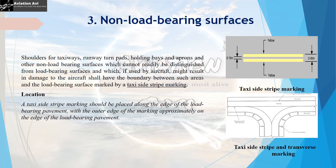Now let us look at visual aids to denote non-load bearing surfaces. Shoulders of taxiways, runway turnpads, holding bays and aprons, and other non-load bearing surfaces which cannot readily be distinguished from load bearing surfaces, and which if used by an aircraft might lead to damage to the aircraft, shall have the boundary between such areas and the load bearing surfaces marked by a taxi side stripe marking. The taxi side stripe marking should be placed along the edge of the load bearing pavement, with the outer edge of the marking approximately on the edge of the load bearing pavement. This taxi side stripe marking should consist of a pair of solid lines, each 15cm wide and placed 15cm apart, and it should be yellow in colour.